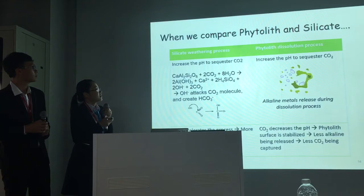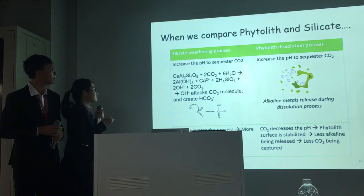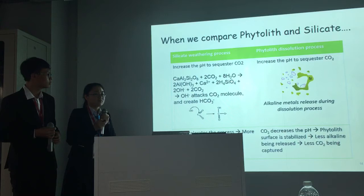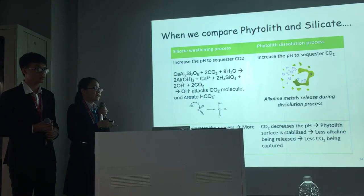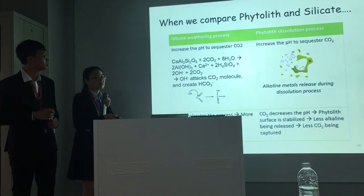You may wonder why we first compared phytolith to the silicate weathering process. The similarity is that they both increase the pH to sequester carbon dioxide. However, we notice a big difference between the two processes. During the silicate weathering process, the more carbon dioxide drawn into the reaction, the more carbon dioxide is captured. However, during phytolith dissolution, more carbon dioxide decreases the pH and stabilizes the phytolith surface, resulting in fewer alkaline metals being released and less carbon dioxide being captured.